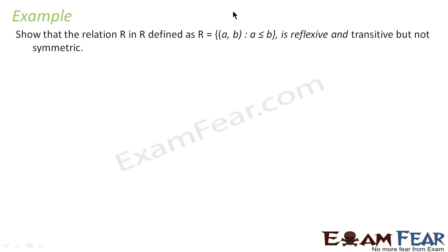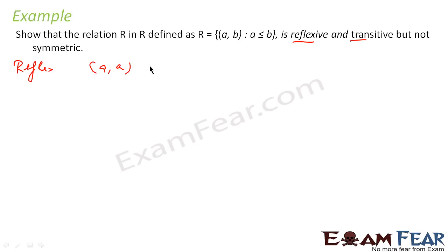A very simple example. Here, the relation is defined in R as (a, b) where a ≤ b, and it is reflexive and transitive but not symmetric. For reflexive, if (a, a) is a member, that means a ≤ a, which is true for any number since a equals a. So it is reflexive.